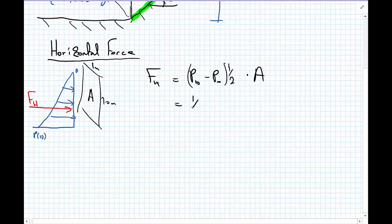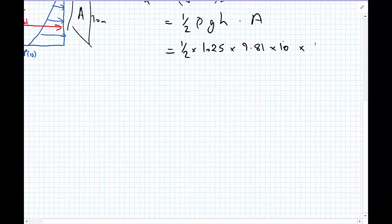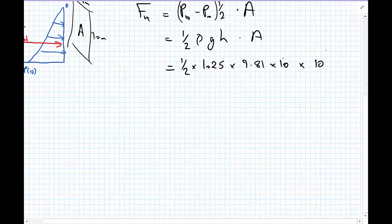We can then calculate this equivalent horizontal force. So FH is equal to the average pressure, which is p at 10 meters minus p at 0 meters multiplied by one-half and then multiplied by the area. So that's equal to one-half of rho GH, where H is 10 meters, multiplied by the area. So we have one-half, multiplied by 1025, multiplied by 9.81, multiplied by the height, which is 10 meters, and multiplied by the area, which is 10 meters by 1 meter, which is 10 meters squared. So this is rho, G, H, and A.